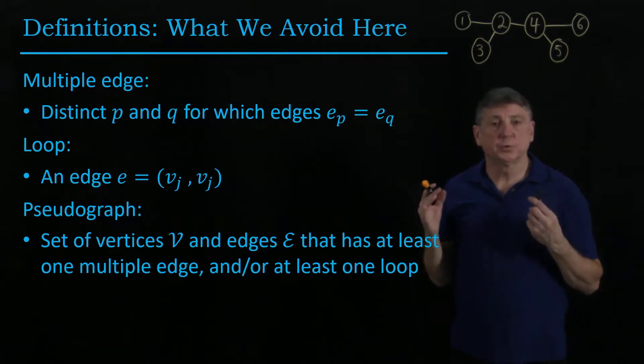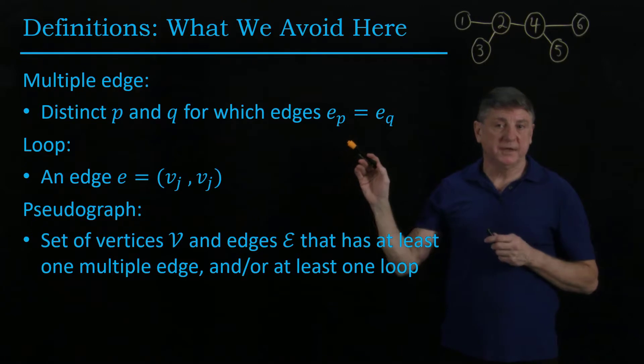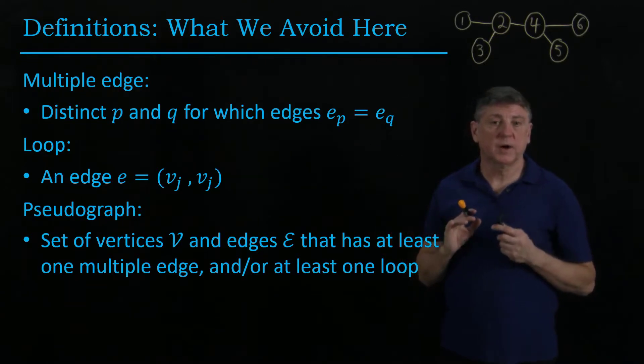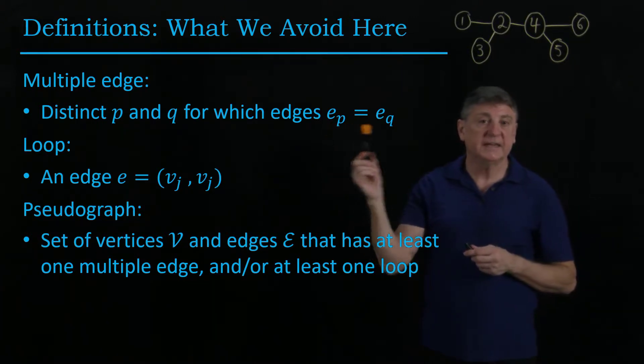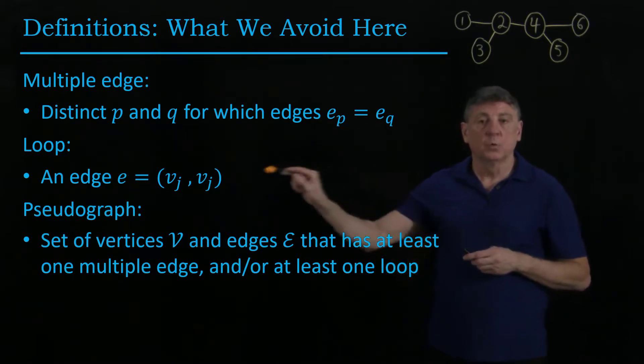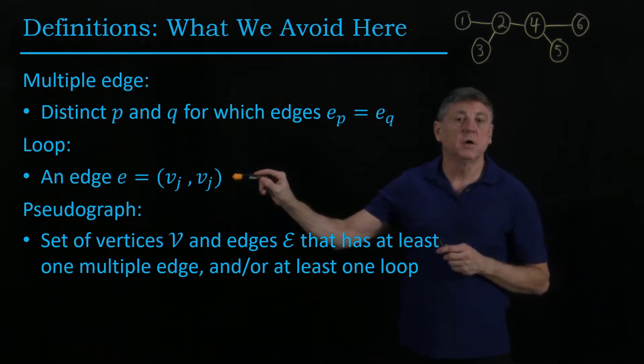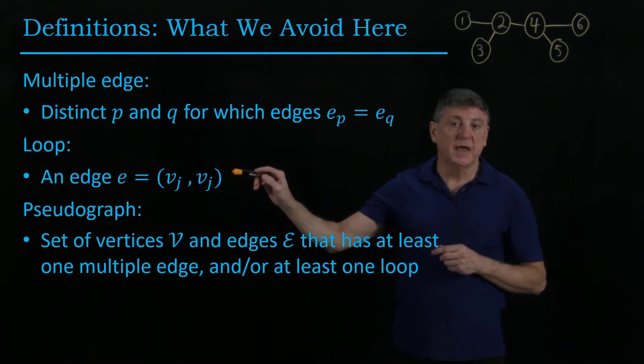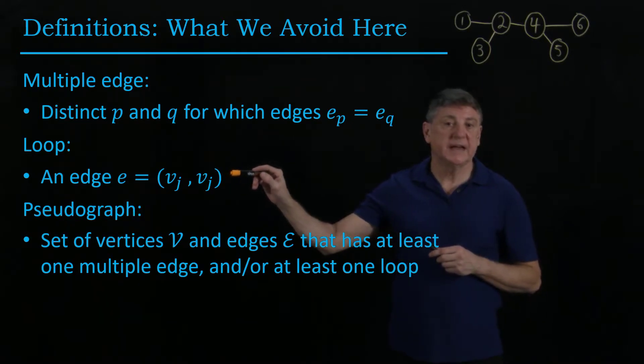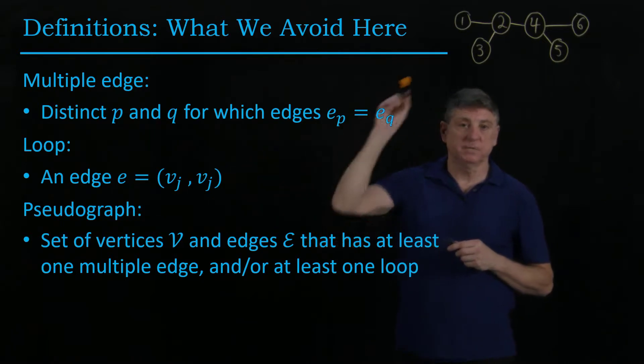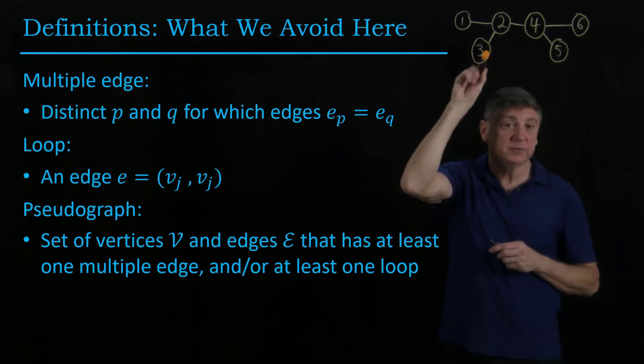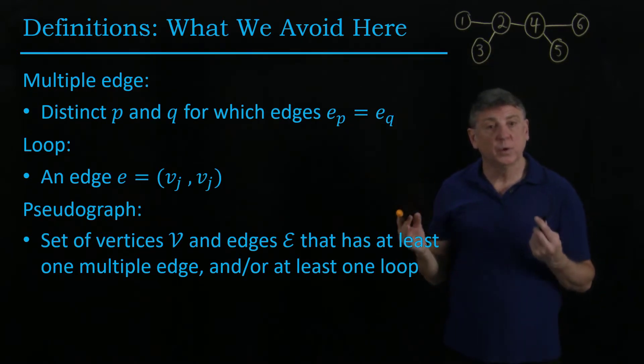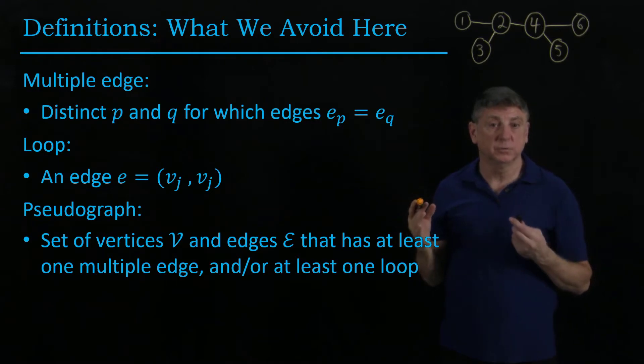The definitions that we're going to avoid here are multiple edges. So we're going to require that our graphs not have these, and these would be defined as distinct edges, that is distinct integers p and q, that index edges that turn out to be the same. We're going to not refer very often to a loop, and a loop in graph theory is an edge from a vertex to itself. So for example, if we were to take 3 and we were to draw an edge beginning at 3 and ending at 3, that would be a loop, and we won't allow a loop in a graph.